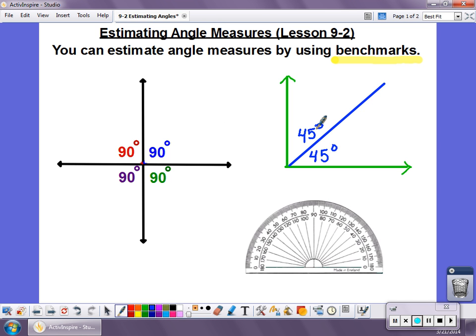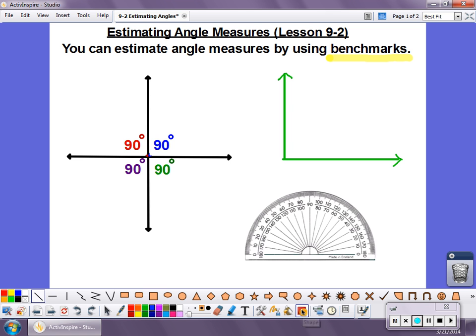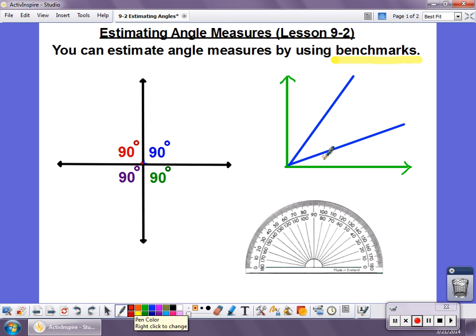And again, what we're doing is we're estimating. It's not going to be perfect, but it's a way for us to be kind of close. One other benchmark that we use with 90 degrees is we might divide it into thirds. So we might have 30 degrees. Or if I had an angle that was about as big as two of these, we might say that was 60 degrees. So we can use all those benchmarks.